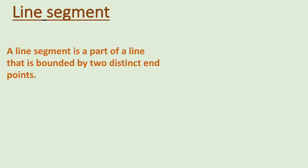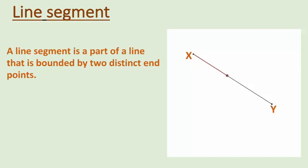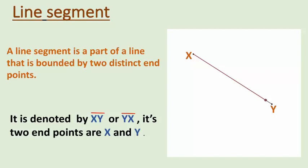A line segment is a part of a line that is bounded by two distinct end points. As you can see in the figure, we have a part of a line bounded by two distinct end points — one point is X and another point is Y. If we have written the name as XY at the end points, then this line segment can be denoted as line segment XY or line segment YX. Its two end points are X and Y.